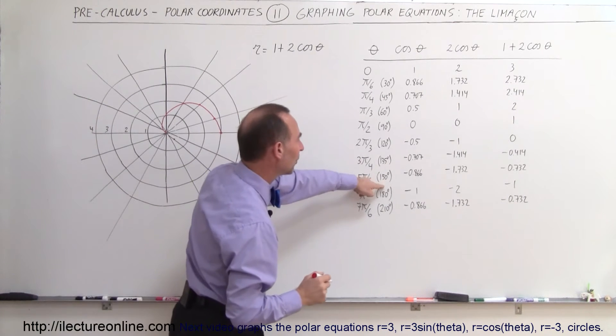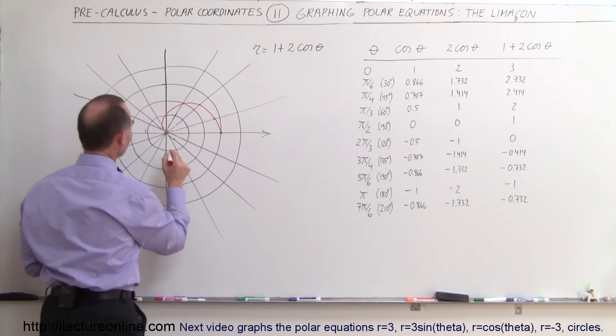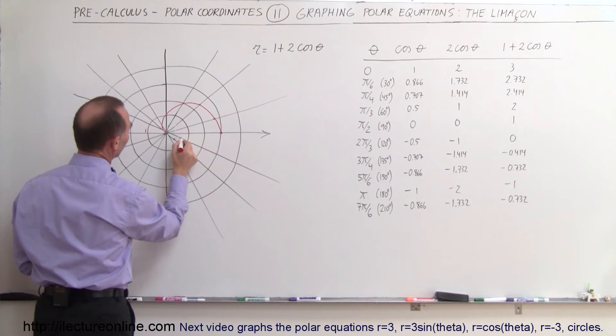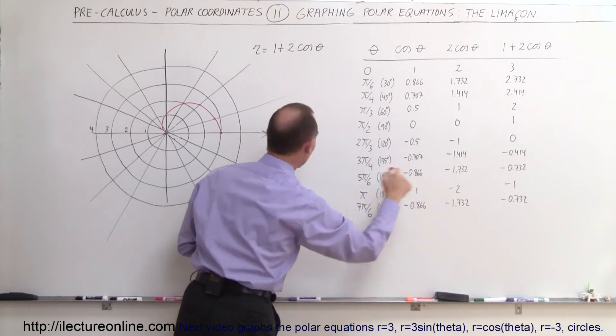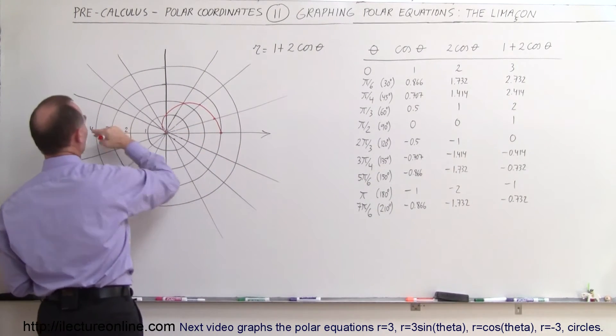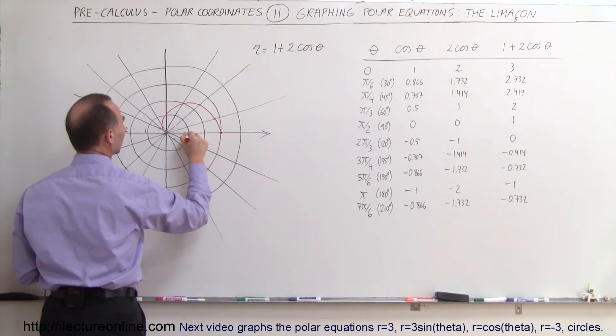Then at a 150 degree angle, it's minus 0.7. So according to here, it's minus 0.7, that would be right there. And finally, at a 180 degree angle, we have a minus 1. So when we're pointing in this direction, we have a minus 1, which puts us right here.